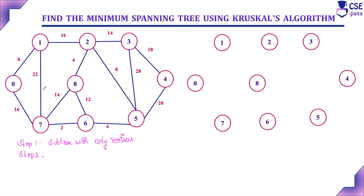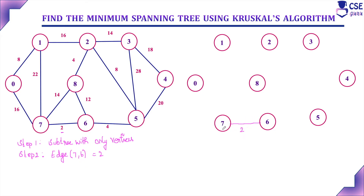Step 2: find the minimum cost edge in the given graph and include it in the subgraph. The minimum cost edge is edge 7,6 with cost 2. We are going to include this edge into our subgraph — edge 7,6 with cost 2.